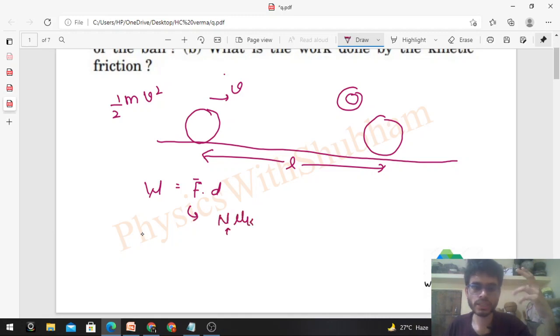N is okay. The normal reaction will be equal to Mg. So you can see here the forces. The vertical direction is Mg and the upper direction is normal.